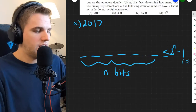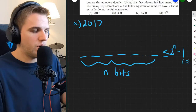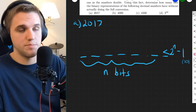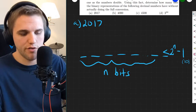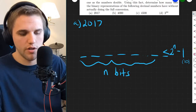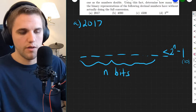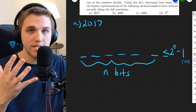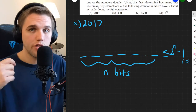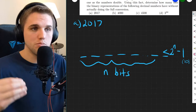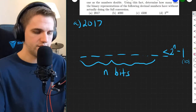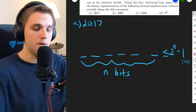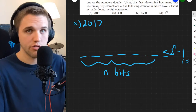So for 2017, how many bits do I need? I need more than five bits because that only gives me two to the fifth minus one, which is 31. With six bits, I can get up to two to the sixth power minus one, which is 63. Still not enough — we need to get up to 2017.